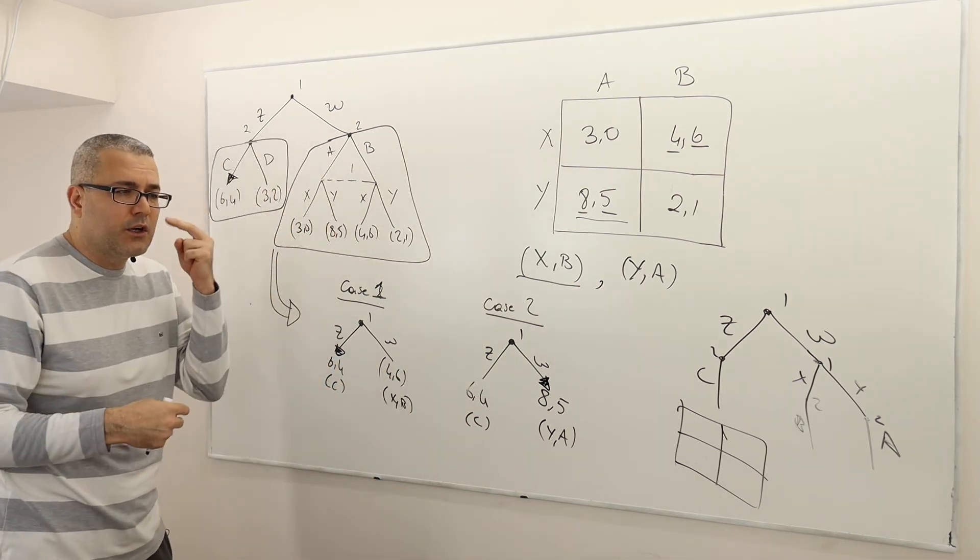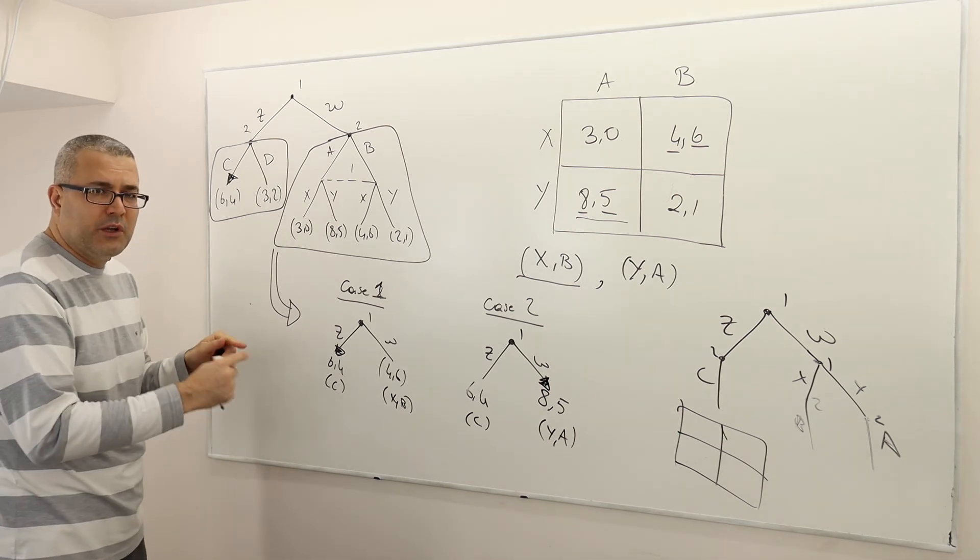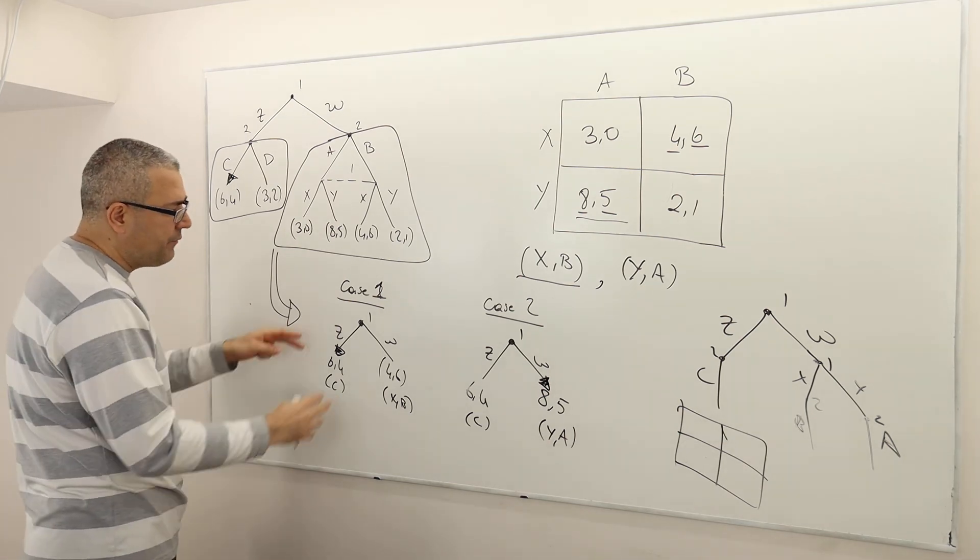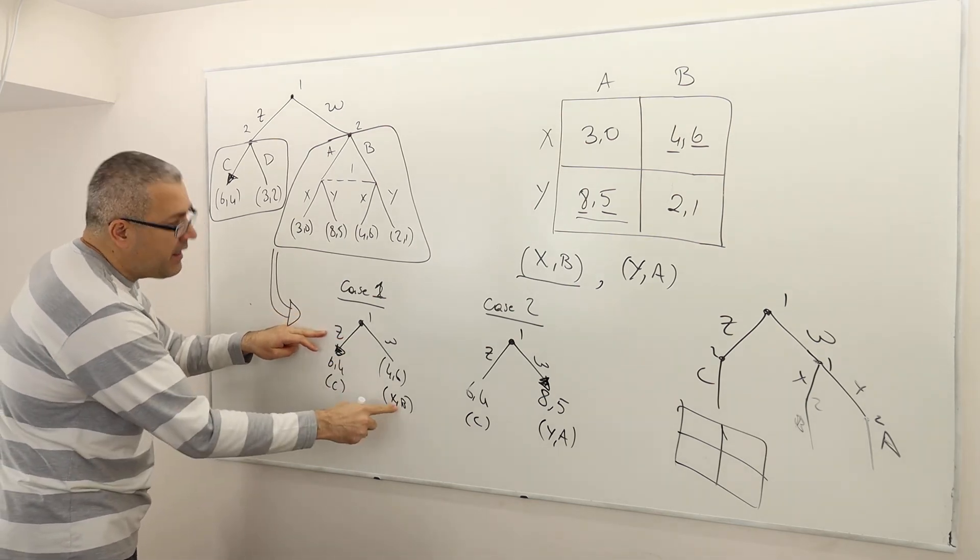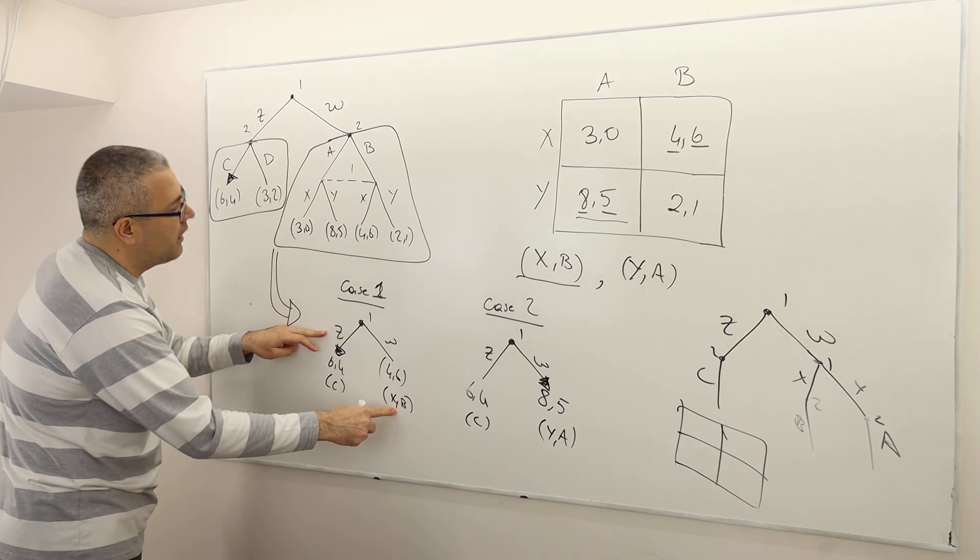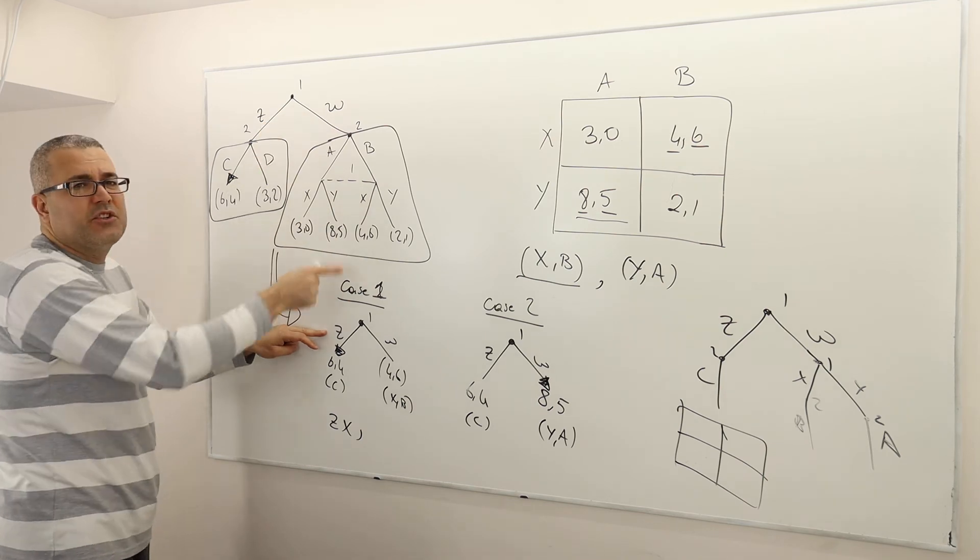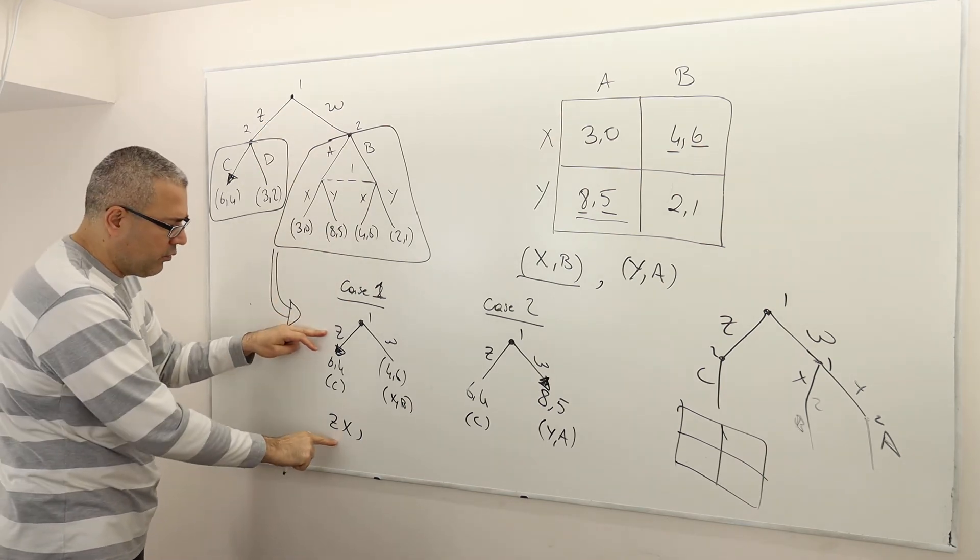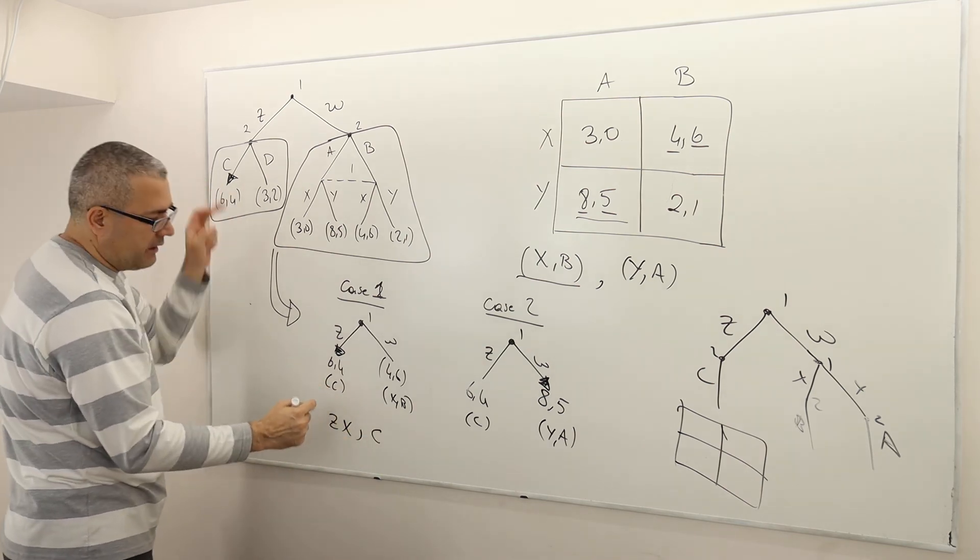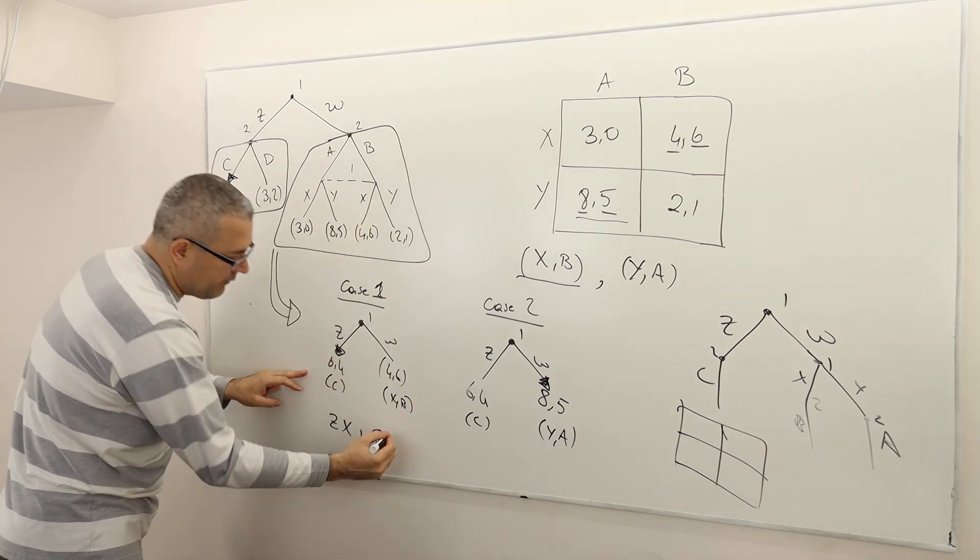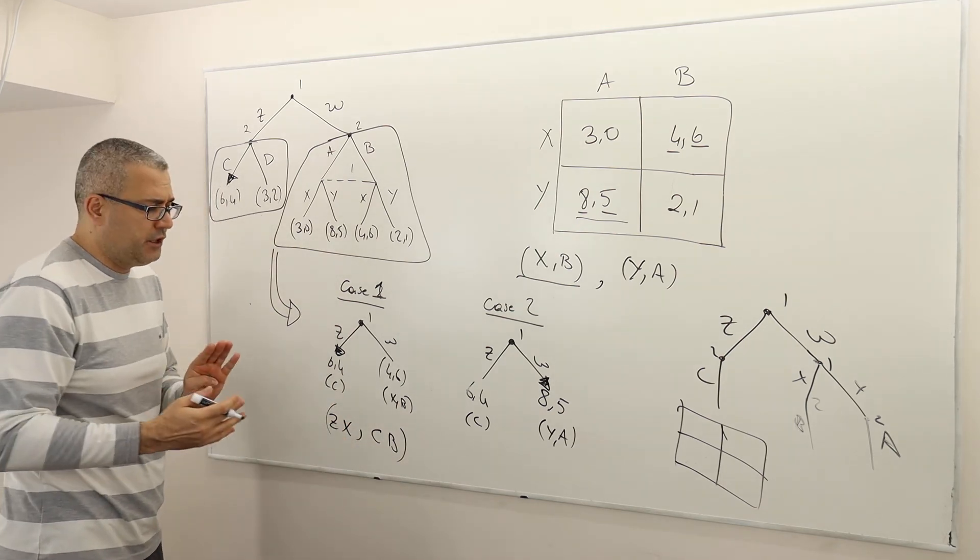So therefore, that means there are two subgame perfect Nash equilibrium strategy profiles. And this is what I'm going to bring, sort of create now. So what are those? Well, player 1 is going to play Z first. And then he's going to play X, right? In this subgame. So that's the entire strategy in this game for player 1. And then for player 2, she's going to play C here and then B here. So then Z,X, C,B is one subgame perfect Nash equilibrium.